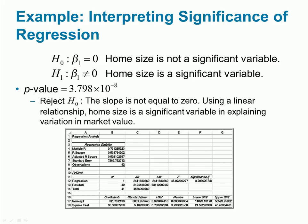It tells me that this is 3.798 times 10 to the negative 8, which is practically zero. Whatever alpha value I use, even at 99 percent confidence, I will reject the null hypothesis and say that square feet has a significant impact on home value.